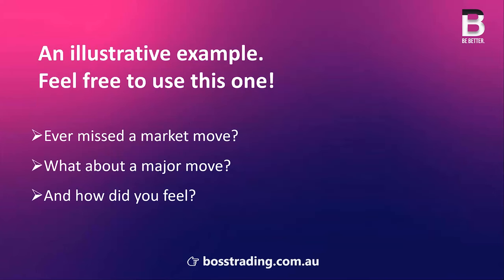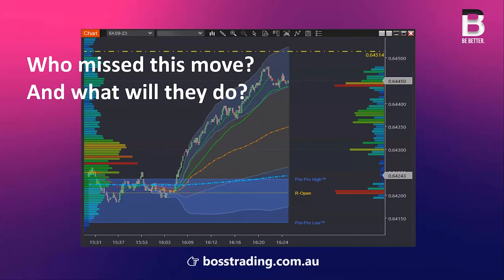Have you ever missed a market move? Of course you have. But what happens when that missed opportunity is a major one? Experiencing disappointment in missing a large move, many people strive to capitalise on a reversal — the underlying principle lies in people trading to regulate their emotional state. The chart shows a sharp move to the upside. We know people are wanting to put on a trade. So you've already got people disappointed they didn't get this move, and the option is to go short — they won't need much of a nudge.